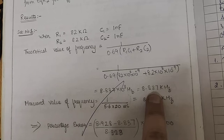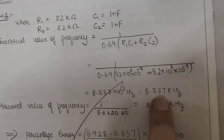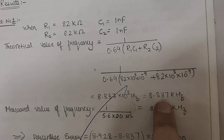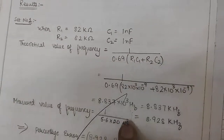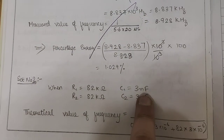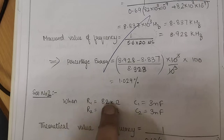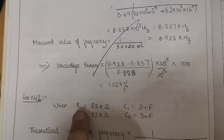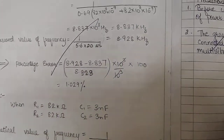When we substitute these values of resistance and capacitance, we get an analytical frequency value of 8.837 kilohertz. This is the theoretically calculated frequency using the expression. In case two, where capacitance is 3 nanofarads but resistances remain the same, we substitute the corresponding R and C values.